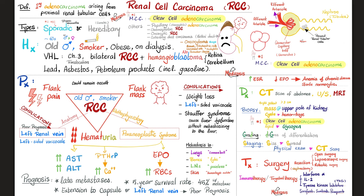When you hear adenocarcinoma, you think glands — glands secrete something. So this cancer can secrete erythropoietin, and before you know it, I have increased red cell count, increased hemoglobin and hematocrit — secondary polycythemia. Would you call this rise in EPO appropriate or inappropriate? It's not secondary to hypoxia — it is secondary to cancer, so it is inappropriate.